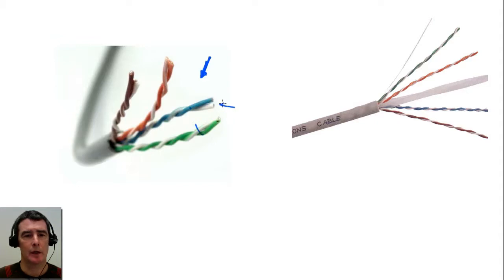And although in here it looks like it's a white color, this is actually white with a blue stripe. Over here would be white with an orange stripe, white with a brown stripe, and white with a green stripe here.